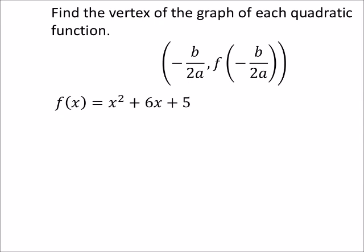I'm going to identify what my a, b, and c values are. In this one, a is positive 1, that's our coefficient of x squared, b is positive 6, the coefficient of x, and our constant is the value 5.